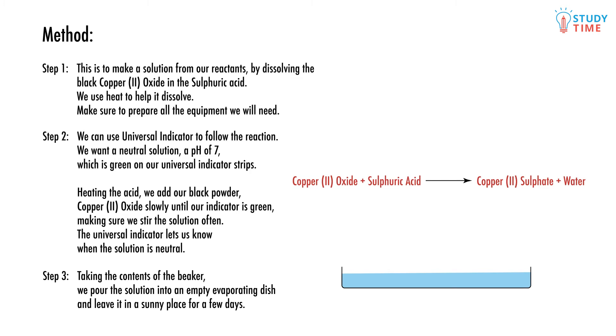With a metal oxide and acid, our products are the metal salt and water, shown by the word equation: copper (II) oxide plus sulfuric acid reacts to produce copper (II) sulfate and water.